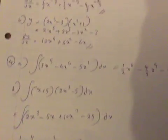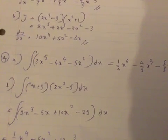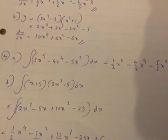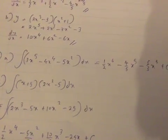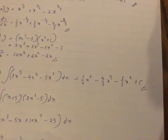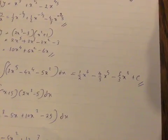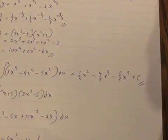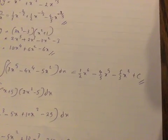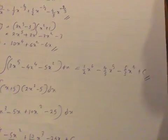Question 4 part A: integral of 3x⁵ - 4x⁴ - 5x² dx, which is half x⁶ minus 4 fifths x⁵ minus 5 thirds x cubed plus c.